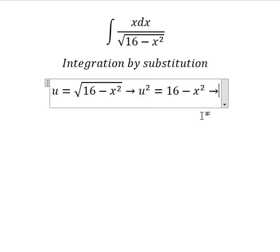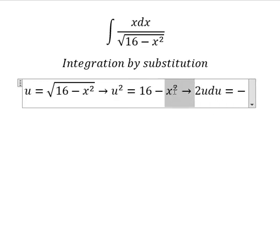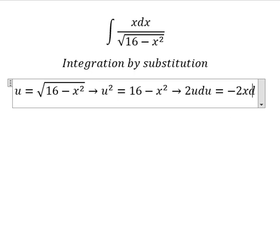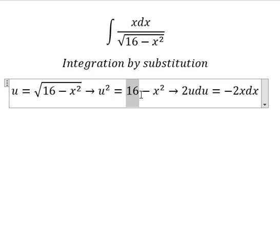This one we have du, this one we have dx. This one is a constant, so we get zero.